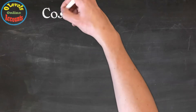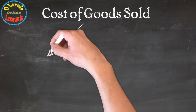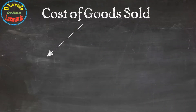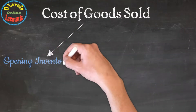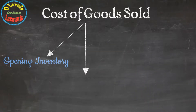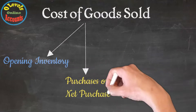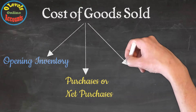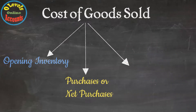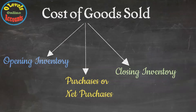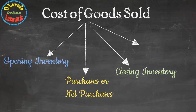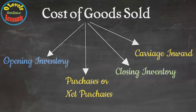There are four components of cost of goods sold. First is opening inventory — stock at the start of the year. Second is purchases or net purchases — stock purchased during the period. Third is closing inventory — stock at the end of the year. And finally, carriage inwards — transportation costs paid for purchases.